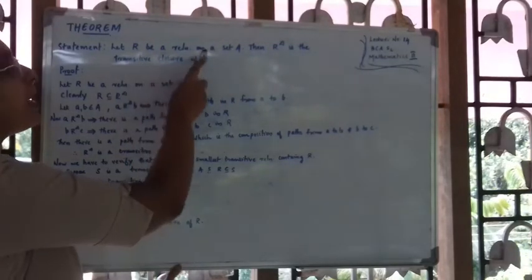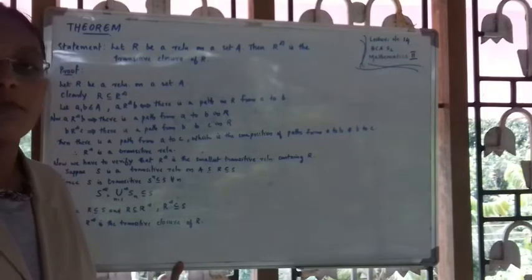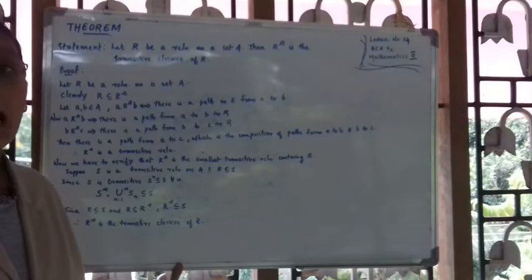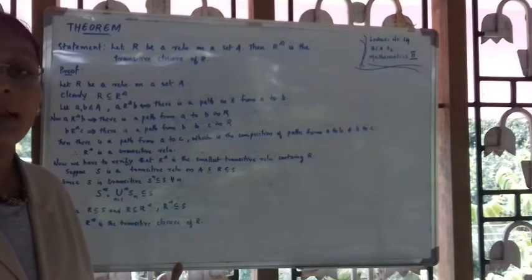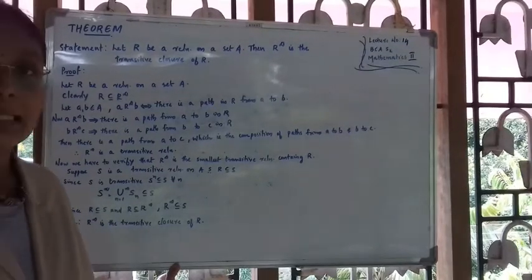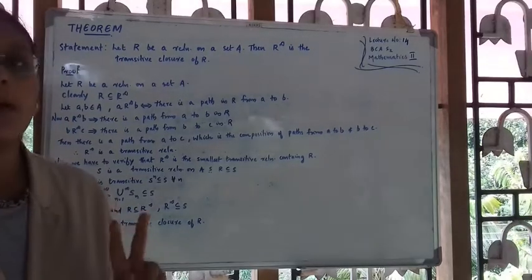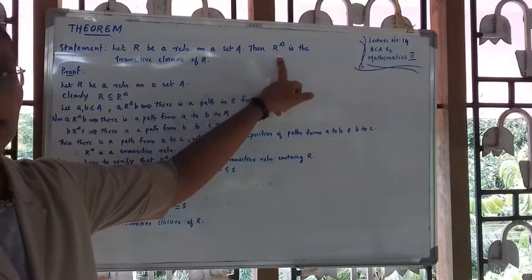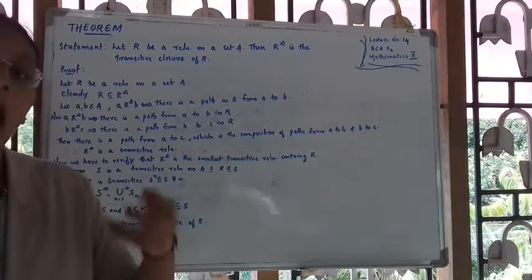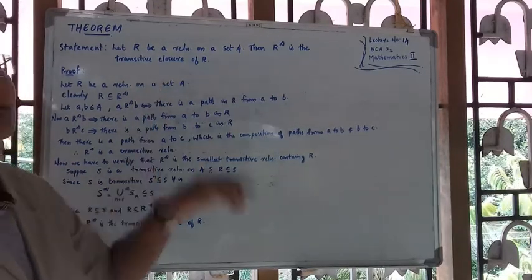The statement of the theorem is: when R is a relation on a set, then R-Infinity is the Transitive Closure of R. R-Infinity is the smallest transitive relation that contains R. So, what we will prove is that R-Infinity is the smallest transitive relation containing R — it is a transitive relation containing R, and it is the smallest such relation.